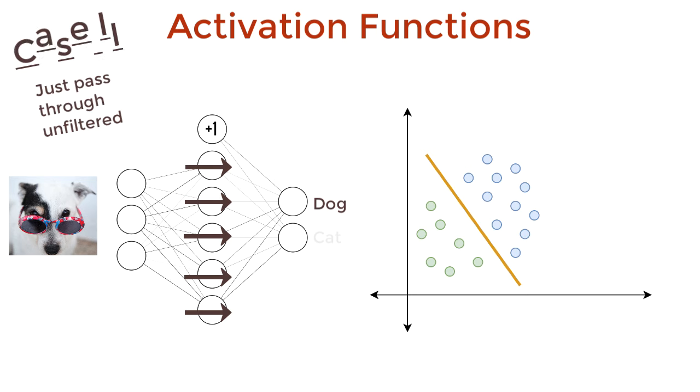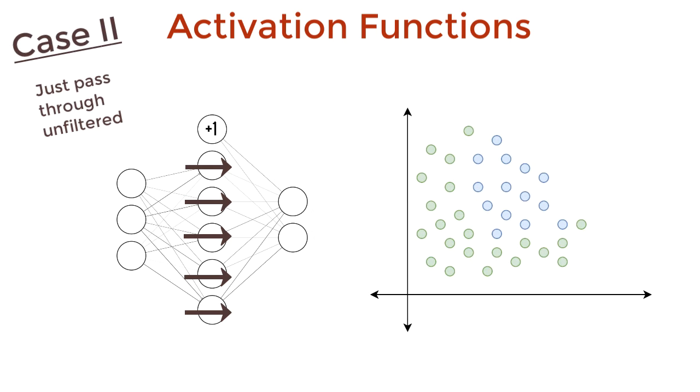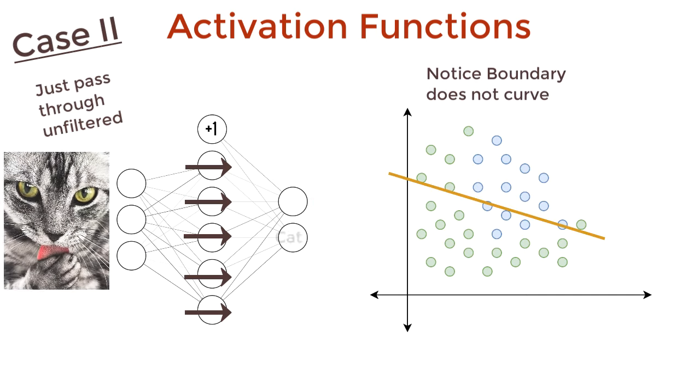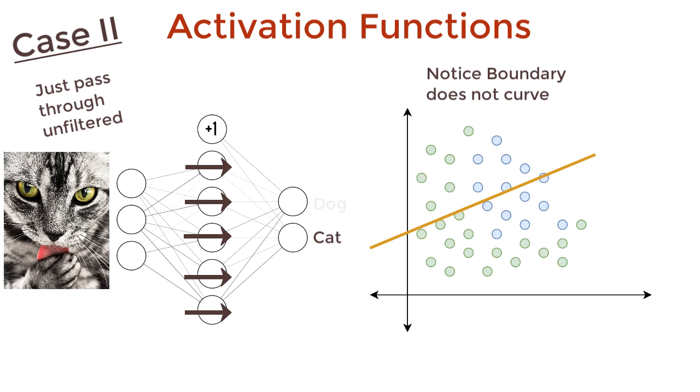But what if data is slightly more complicated? I got this. Wait, no. Why won't it fit? Not so easy anymore, is it? Our network is too simple to capture patterns in the data.